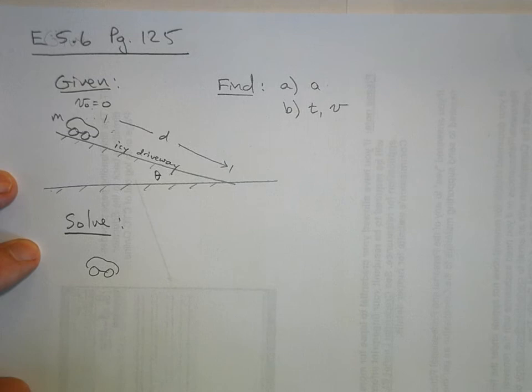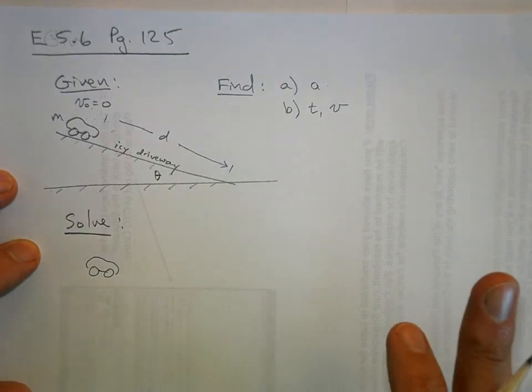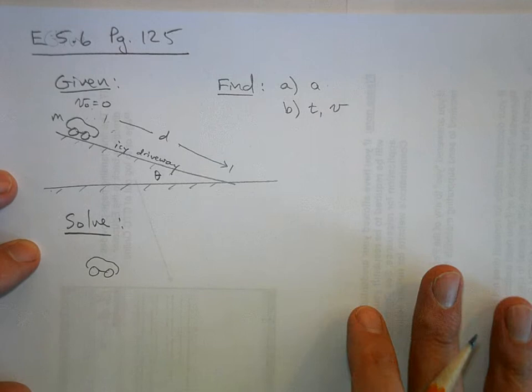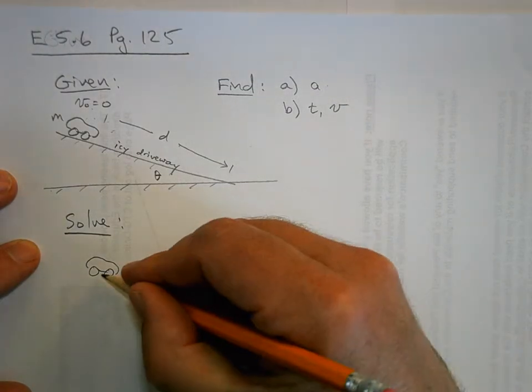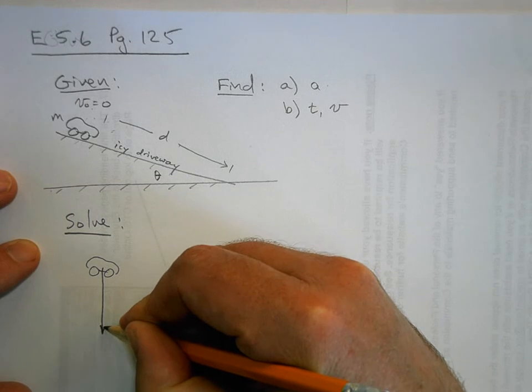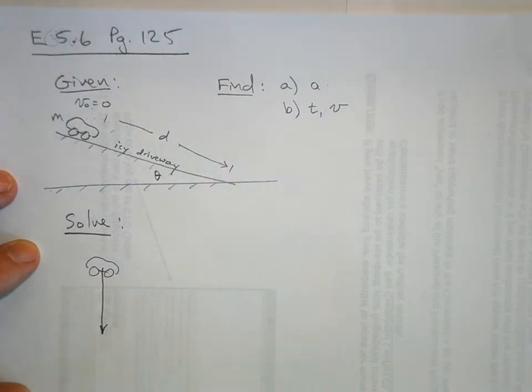So the object of interest is the car. So here's the car. And what is acting on the car? What outside agents are applying forces to the car?